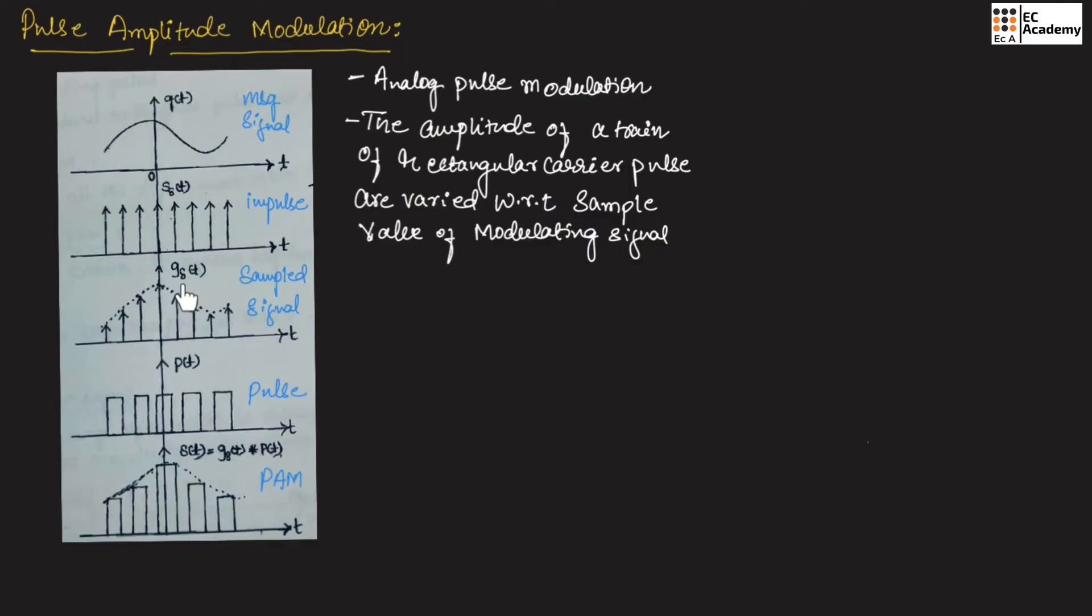Here sampled signal is G delta of T. The train of rectangular pulses is P of T. Therefore, the PAM signal is obtained by convoluting G delta of T and P of T.